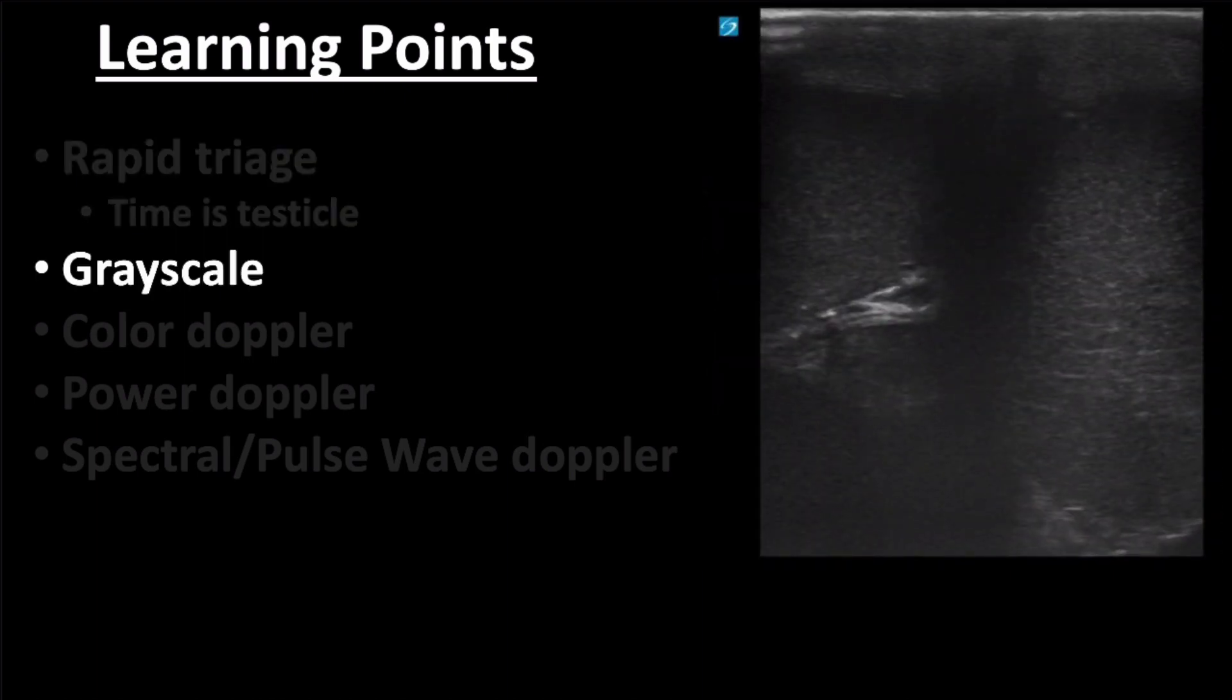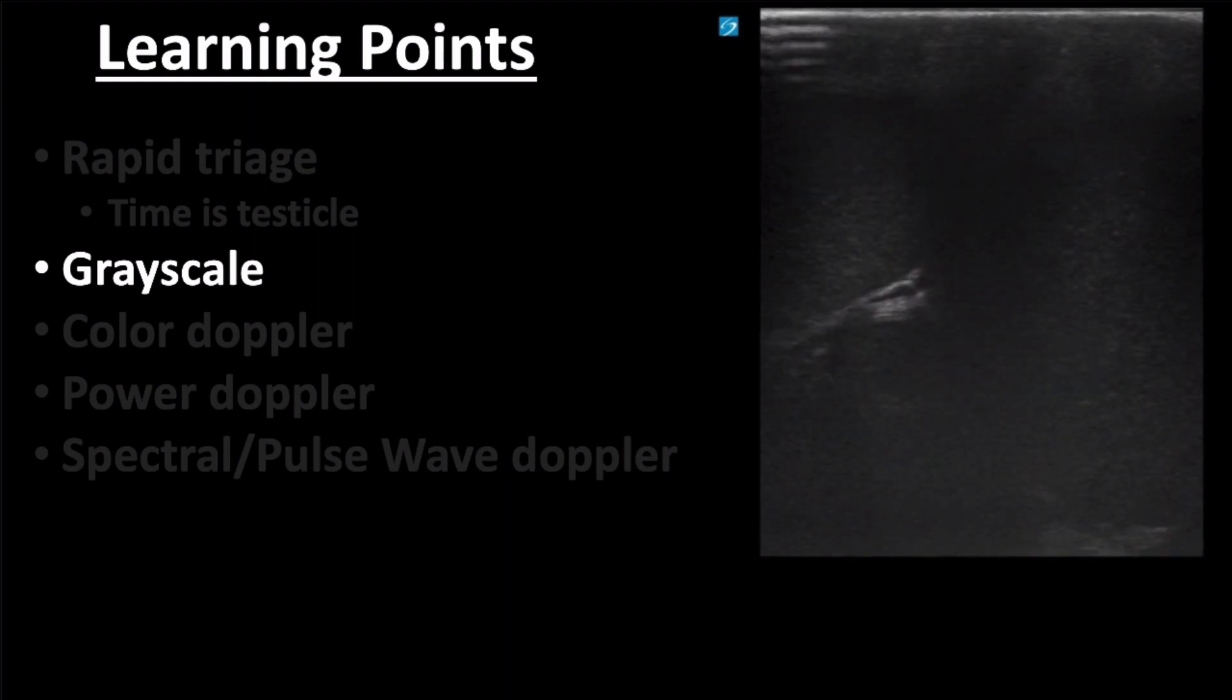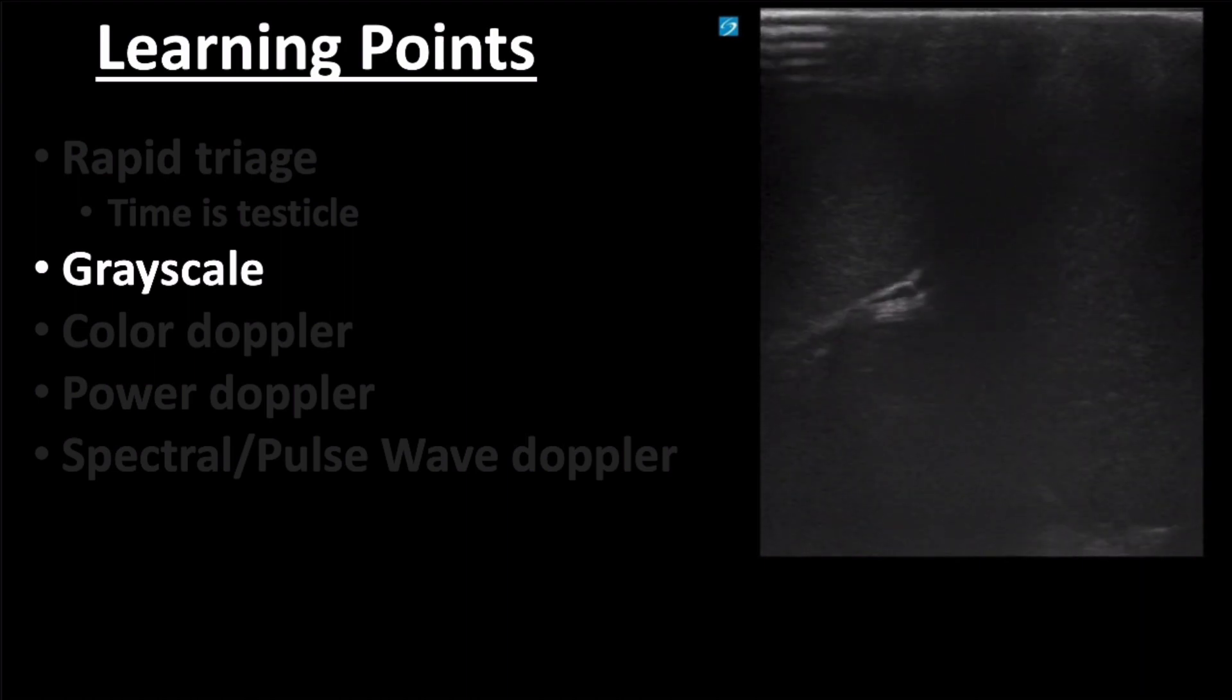I wanted to at least touch on evaluation of the grayscale appearance of the testicle on imaging since I mentioned it in the case. In most cases, torsion will lead to a hypoechoic or darker appearance of the testicle when compared to the unaffected side secondary to edema.